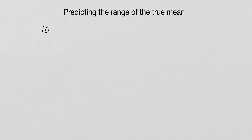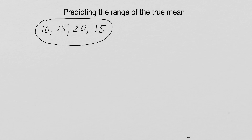So let's say we measure 10, 15, 20 and again 15. We say okay, this is the measurements that come from a certain experiment. But we could have done this experiment not just four times — we could have done it 10 times, 100 times, a million times. And we would like to know where the true mean of this data would be if we had done the experiment a billion times.